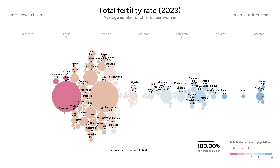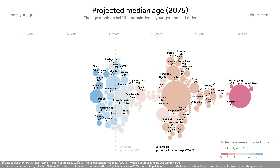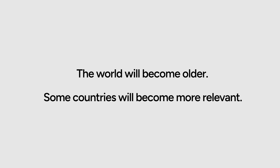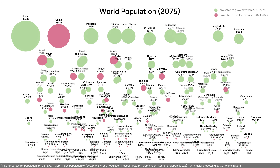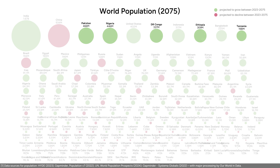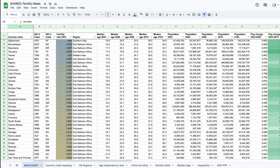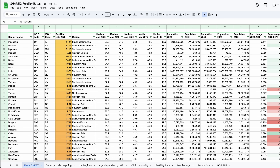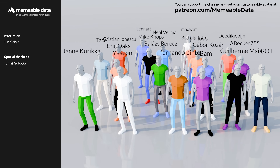So what does our future look like? I took two main conclusions from my research. One, the world will get older — every country without exception will get older and the world will have to find ways to deal with this. And secondly, some countries will become more relevant. In 2075, the US falls to fifth position in the population ranking, Pakistan and African countries make their way up, and Europe and East Asia will lose population. African countries will represent a much larger share of the population and the economy in the future, and most people don't realize it yet.